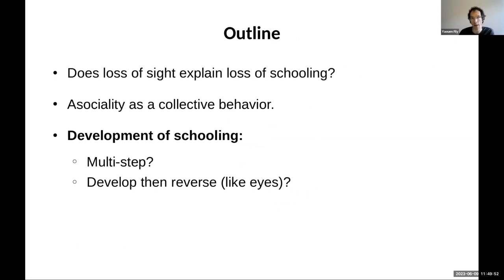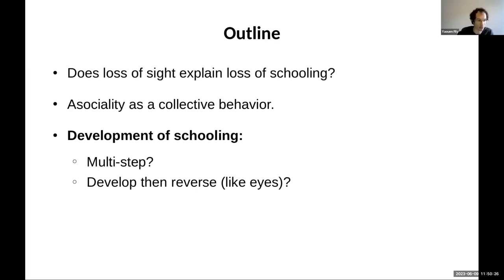The last thing I want to talk about is more recent work on the development of schooling in these fish. Some questions we had going in: Does the appearance of schooling happen all at once or in multiple steps? We know some fish show schooling — staying close and going in the same direction — while others show only shoaling: staying close but not caring about direction. The genetic and neural architectures for aligning versus for getting close to each other could be different, and these could arise at different developmental stages. In cave fish specifically, which are descended from schooling surface fish, you could imagine early development producing some schooling-like behavior that then gets reversed — analogous to what happens with their eyes.